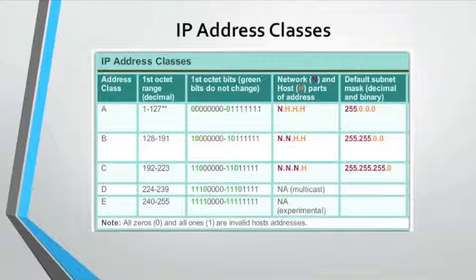Class A addresses were designed to support extremely large networks with more than 16 million host addresses. Class A IPv4 addresses use a fixed /8 prefix, with the first octet indicating the network address. The Class B address block was designed to support moderate to large-sized networks with up to approximately 65,000 hosts. Class B equally divided 25% of the total IPv4 address space among approximately 16,000 networks. The Class C address block was the most commonly available and was intended to provide addresses for small networks with a maximum of 254 hosts, using a /24 prefix.